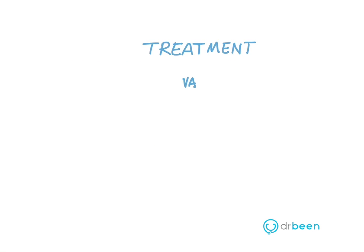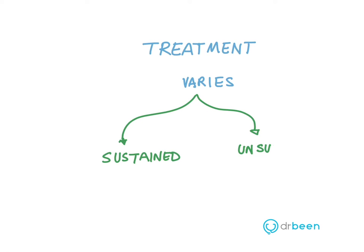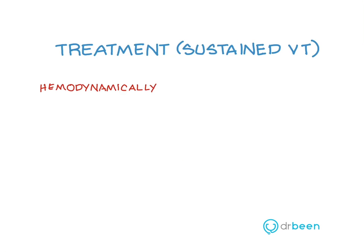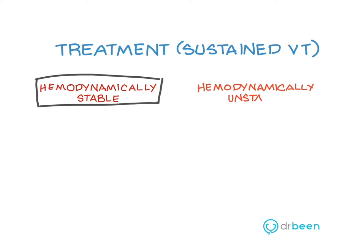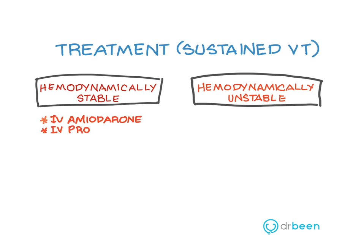The treatment for sustained and unsustained ventricular tachycardia differs slightly. For sustained ventricular tachycardia, if the patient is hemodynamically stable with mild symptoms and has a systolic blood pressure greater than 90, pharmacological therapy includes IV amiodarone, IV procainamide, or IV sotalol.